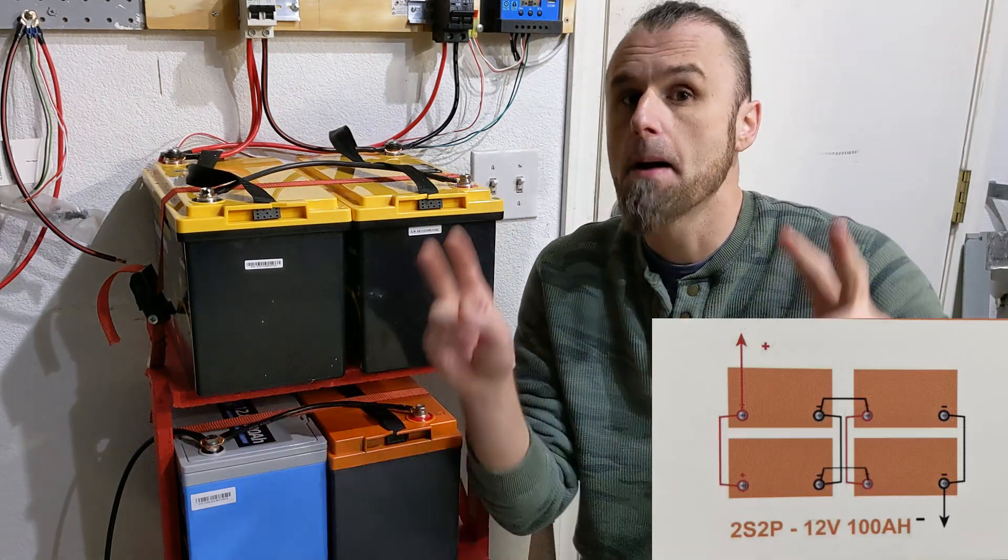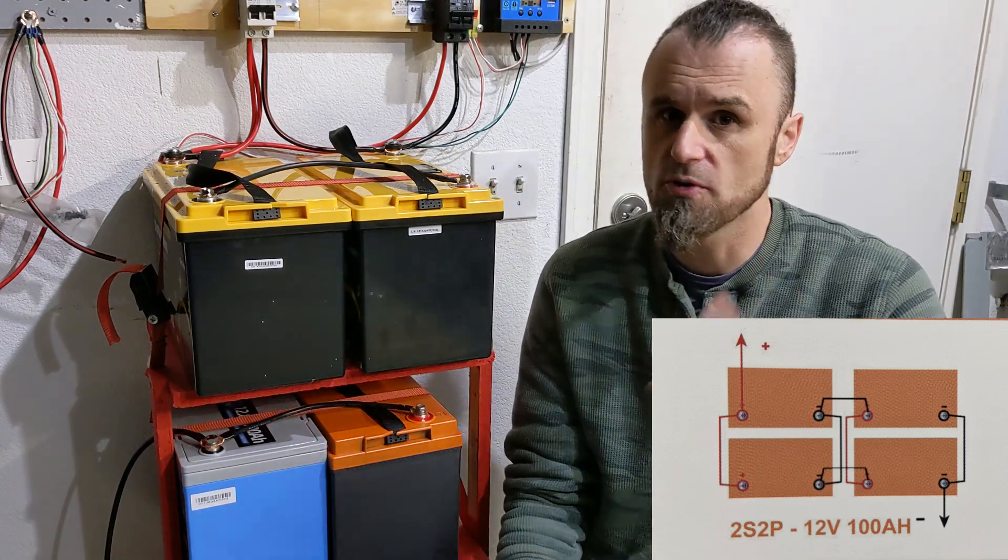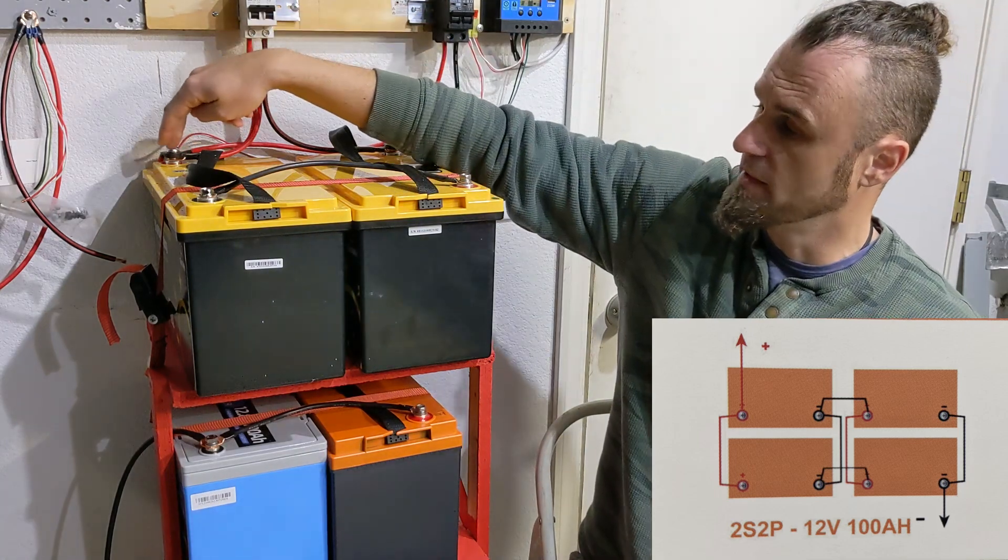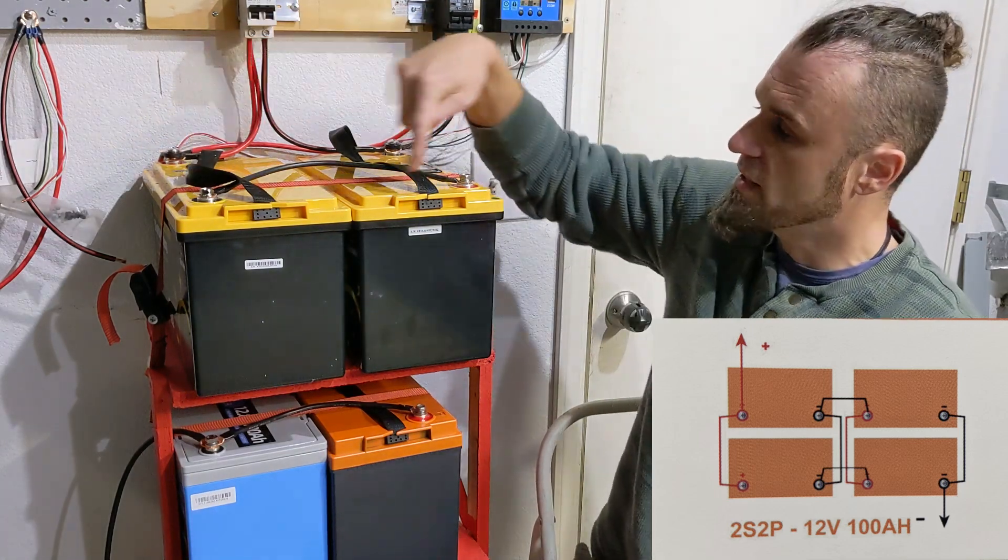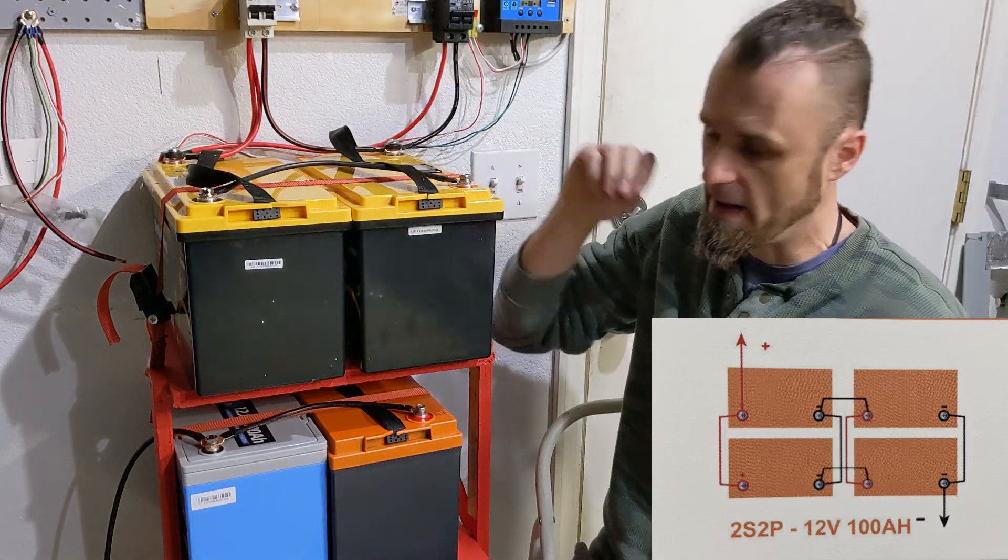To hook them up in series properly, by the manual, this is how you're supposed to do it. So you have the negative terminal over here, the positive terminal over here, and then you go around and you link them together. So then you have 12 volts in series and you make a 24 volt battery.